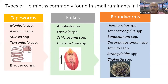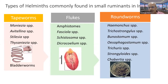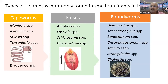Considering flukes, the most common group is amphistomes, followed by Fasciola, the liver fluke, then Schistosoma species. The biggest problem is roundworm infection and the list is very long. The prominent roundworms associated with pathogenic effects or economic losses include Haemonchus — the enemy number one — then Trichostrongylus, Bunostomum, Oesophagostomum, Trichuris, Strongyloides, and Cooperia, among many more. These are common roundworms confronted by field veterinarians.